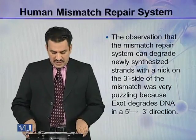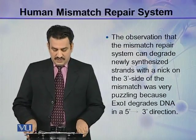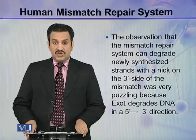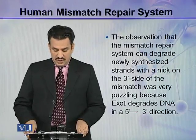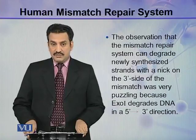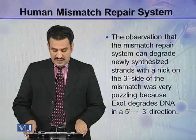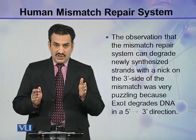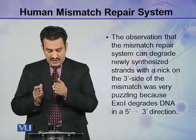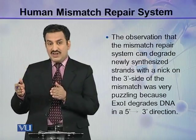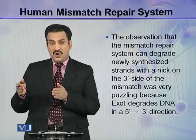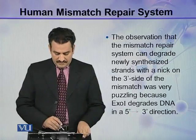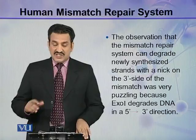The observation that the mismatch repair system can degrade newly synthesized strands with a NIC on the 3' side of the mismatch was very puzzling, because Exo-1 degrades DNA in a 5' to 3' direction. So it starts degradation from 5' to 3'. But when the NIC is present on the 3' side, how would this enzyme degrade from 3' to 5'? So this was very puzzling.